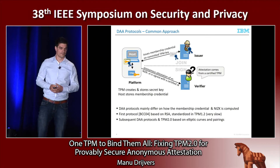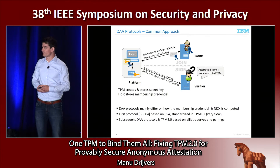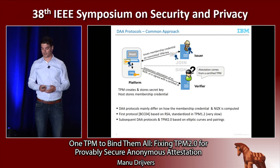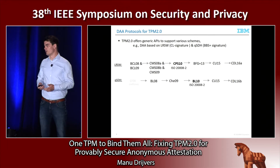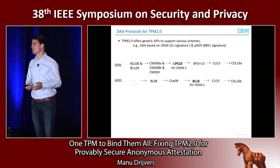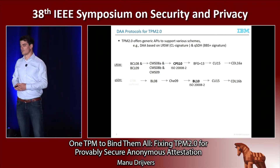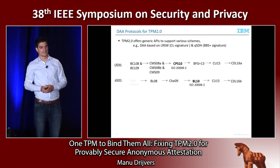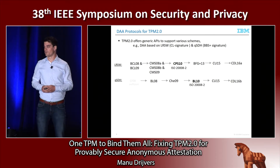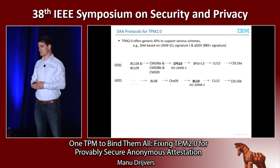The difference between the different DAA protocols is in the type of membership credential issued and in how you instantiate the zero-knowledge proof, which are the attestations. For TPM 2.0, we are in the elliptic curve setting. There are many different protocols for anonymous attestation, and you can see them as two lines of work: the first is based on the so-called LRSW assumption, and the second uses the strong Diffie-Hellman assumption.